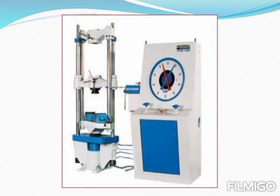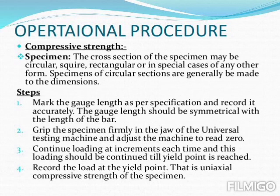Here is a clear picture of a universal testing machine. To perform a compressive strength test, the cross section of the specimen may be circular, square, rectangular, or in special cases any other form.